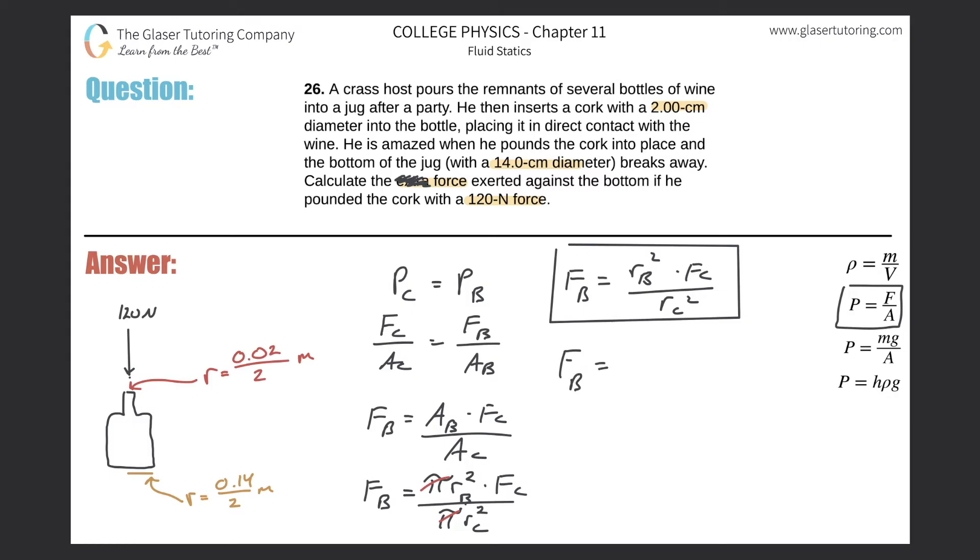Let's plug in the numbers and solve. We have the radius of the bottom: 0.14 all over 2, that's squared, times the force on the cork which was 120 newtons, all divided by the radius of the cork itself, so that's 2 centimeters converted into meters divided by 2 because that was the diameter, square that.